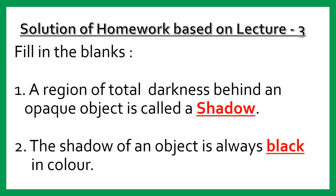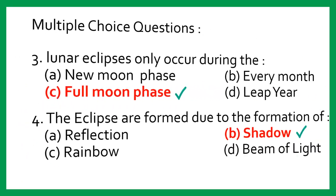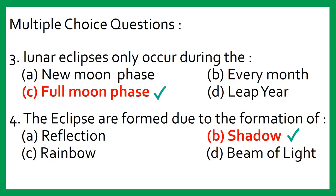That's all for this video lecture. Let's quickly look at the solutions to the homework based on lecture number 3. Question 1: A region of total darkness behind an opaque object is called a shadow. Question 2: The shadow of an object is always black in colour. Question 3: Lunar eclipses only occur during the full moon phase — Option C. Question 4: Eclipses are formed due to the formation of shadow — correct option, Option B.